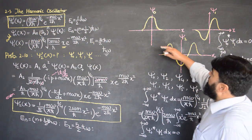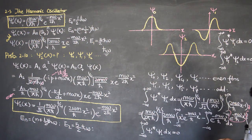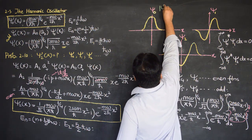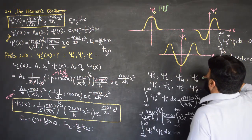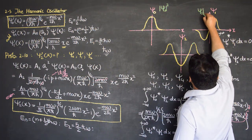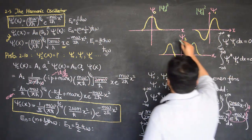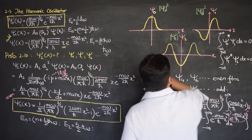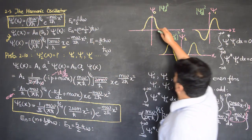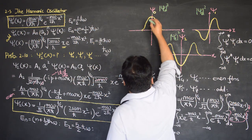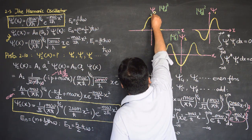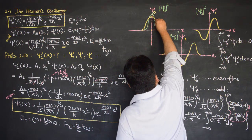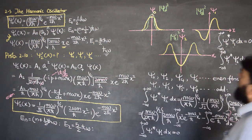Now, instead of plotting psi, we can plot the probability densities — psi_0 mod squared, psi_1 mod squared, and psi_2 mod squared. When we square the wave function, the only change is that the amplitude increases a little and the peaks become sharper. The overall shape is the same, but the function is now always positive.